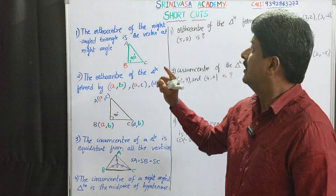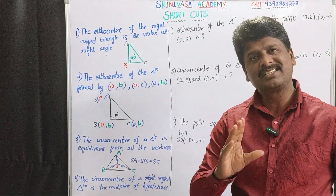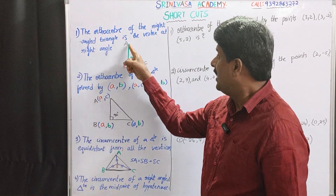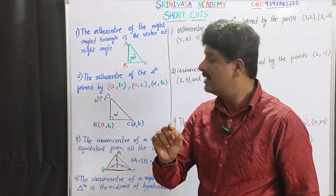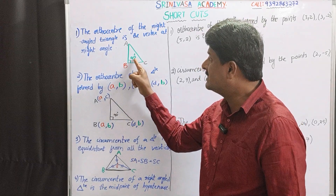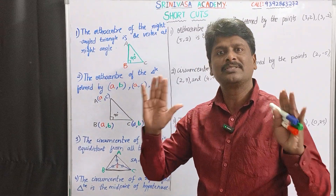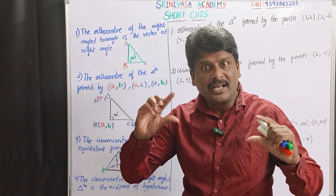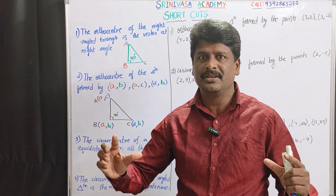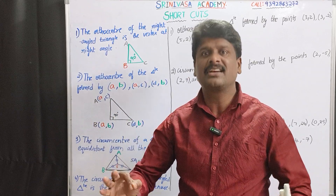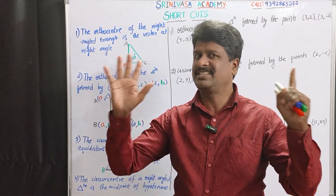First point: the ortho center of the right-angled triangle is the vertex at right angle. In a right-angled triangle, there are three vertices. One of the vertices is at right angle, and this vertex itself is called the ortho center of the triangle. The ortho center of any triangle is the point of concurrency of altitudes, but particularly for a right-angled triangle, the ortho center is the vertex at right angle.